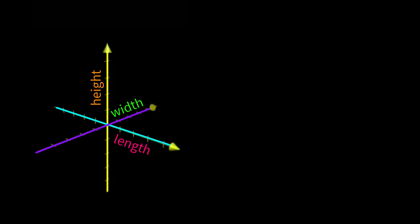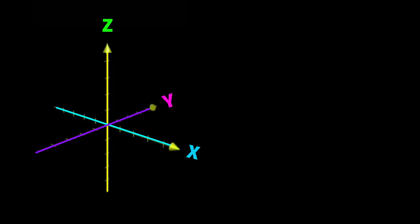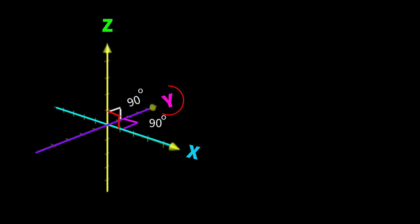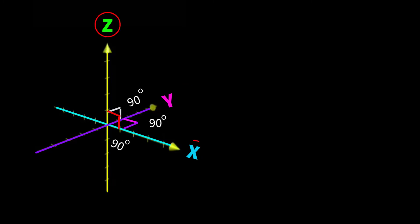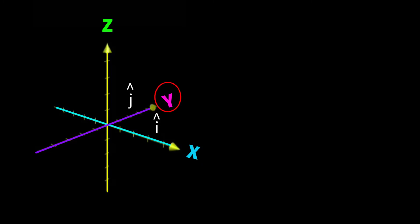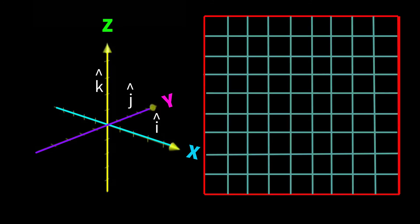In a three-dimensional coordinate system, the representation of vectors will be different. In this system we get length, width, and height all together, so we get three axes here: this is the x-axis, this is the y-axis, and this is the z-axis. These three axes are mutually perpendicular to each other. The angle between the x and y axis is 90 degrees, the angle between y and z axis is also 90 degrees, and the angle between the z and x axis is also 90 degrees. We represent vectors along the x-axis by i-cap, along the y-axis by j-cap, and along the z-axis by k-cap.